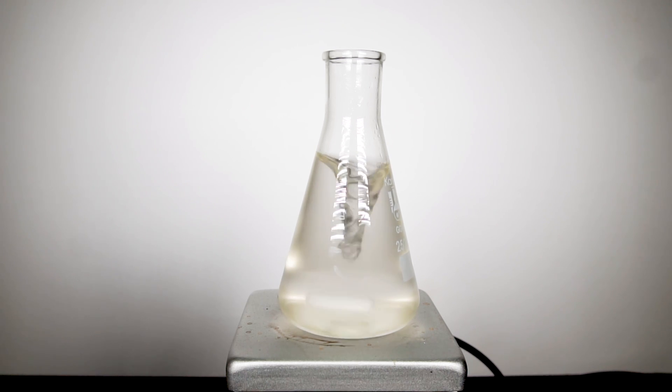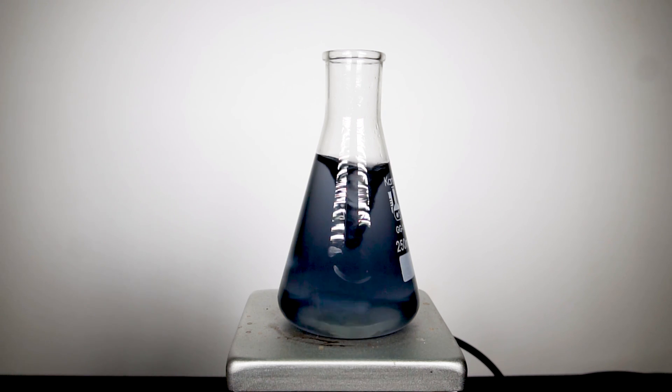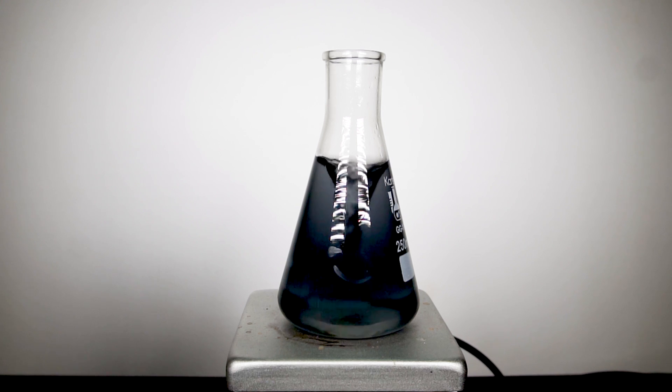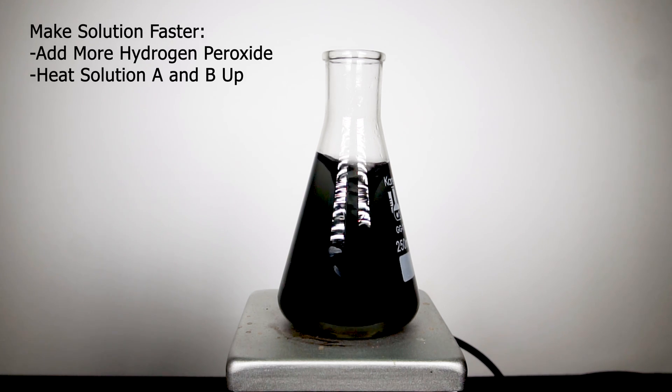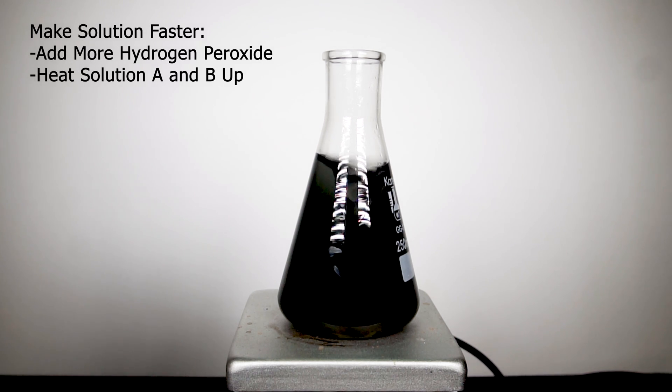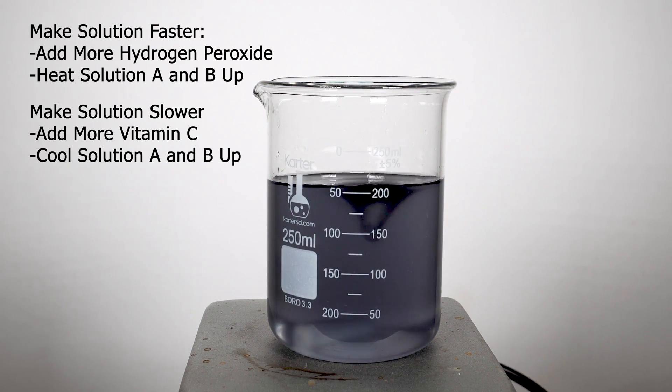Earlier I mentioned how this was a great example of kinetics, and these multiple reactions are why. We can either increase or decrease the reaction by either changing the quantity of our starting materials or changing the temperature in general. To make everything go quicker, we can add in additional hydrogen peroxide as well as increase the temperature. Or if we want to make things take longer, we can increase the concentration of vitamin C or lower the temperature.